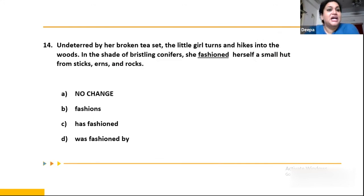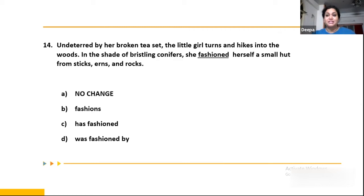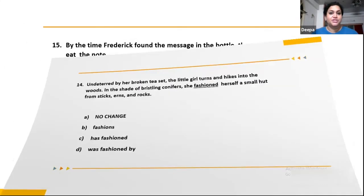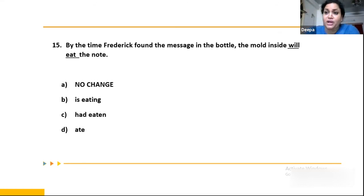Question 14: 'Undeterred by her broken tea set, the little girl turns and hikes into the woods. In the shade of bristling conifers, she fashioned herself a small hut from sticks, urns, and rocks.' We already have 'turns' and 'hikes' as parallel structure verbs. We need to maintain parallel structure. Therefore the answer is B: 'fashions' — continuing the same verb format. Question 15: 'By the time Frederick found the message in the bottle, the mold inside will eat the note.' The answer is C: 'had eaten the note' — because eating is the first action, and Frederick finding the message is the second action. Past perfect is required.